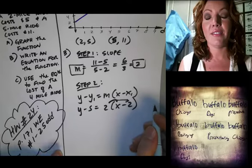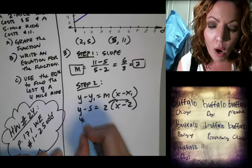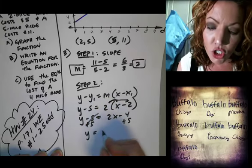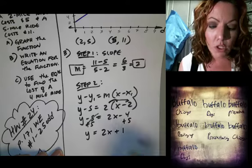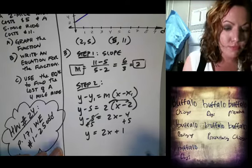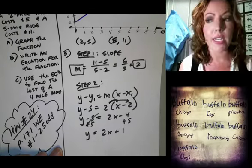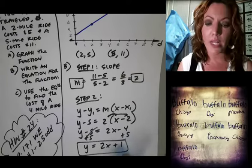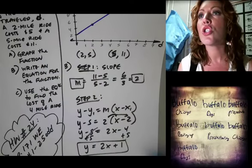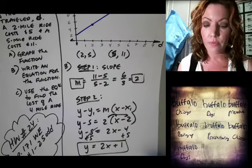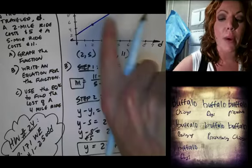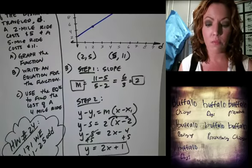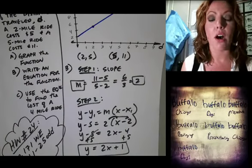Simplifying: y minus 5 equals 2x minus 4. Add 5 to both sides: y equals 2x plus 1. So my graph is a little bit off — the y-intercept should be 1, not 2 as I drew it. That's why I prefer the equation.